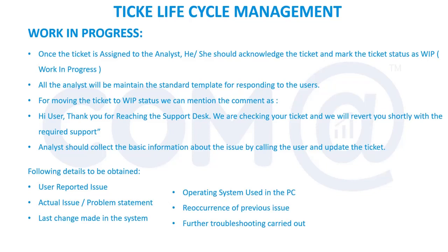This is the second mail received by the end user. The first mail notified them that the ticket was assigned to someone from the team. The second mail — the WIP update — tells them that the particular engineer is going to look at the ticket and resolve the issue. The user will be happy because somebody is there to take care of their issue, which is why analysts are always asked to move the ticket into work in progress.